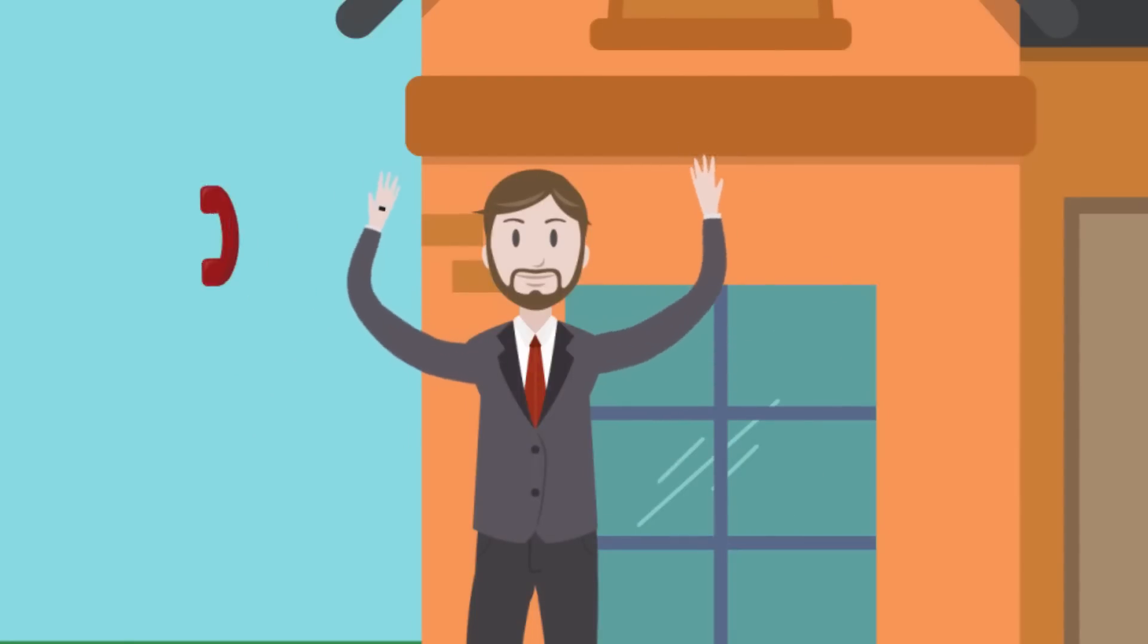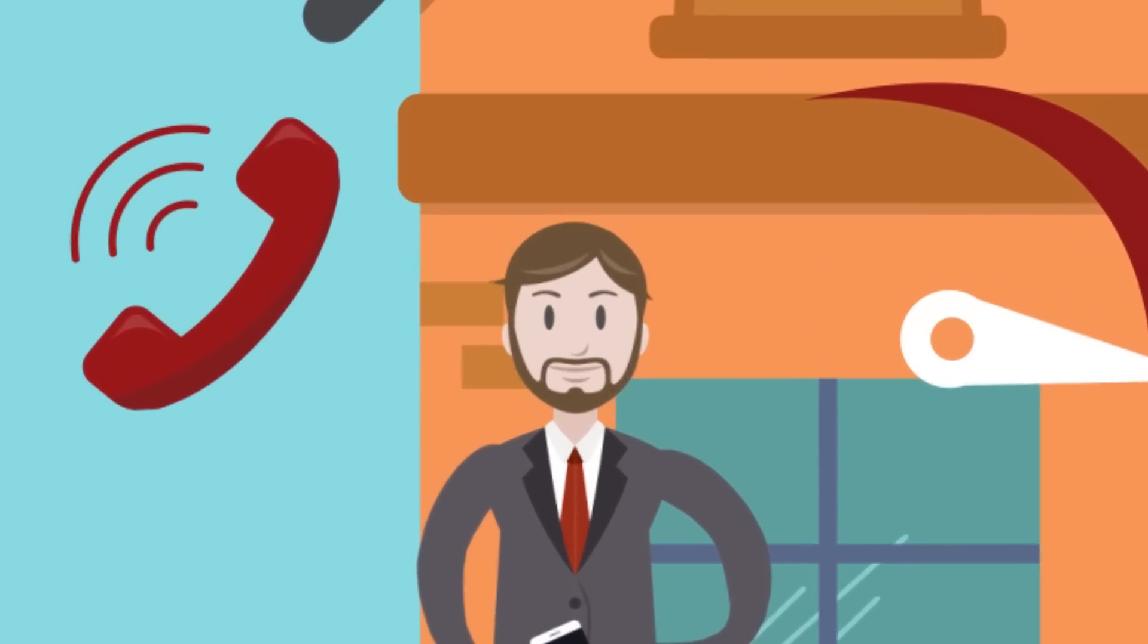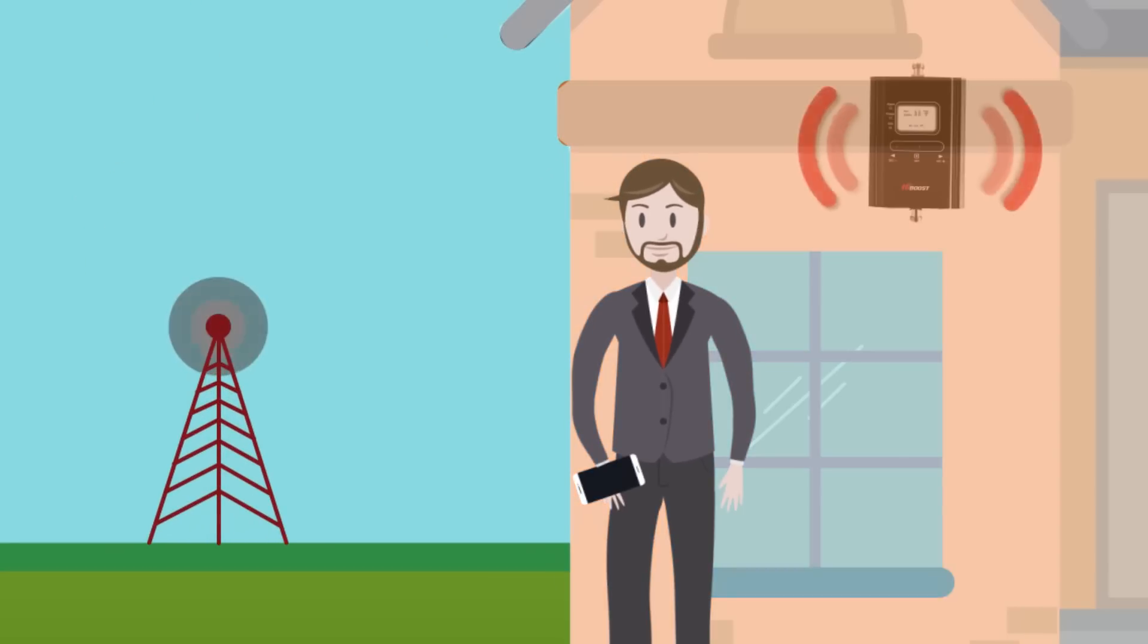Bob is happy. He enjoys perfect calls and smooth mobile internet. Thanks to smart auto setup for his outdoor signal conditions, his device doesn't make interference with cell towers.